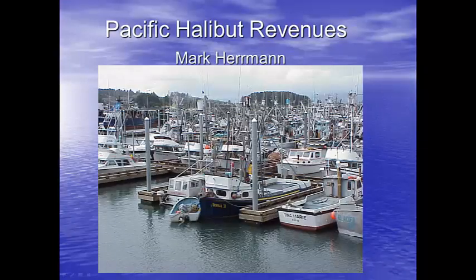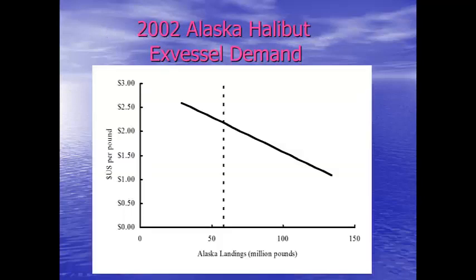I thought it might be fun to give you a real-life example of a demand curve. I'm a fisheries economist, and I've done a lot of work on Alaska fisheries. This is one example I have on Pacific halibut. The first step of estimating Pacific halibut revenues is to estimate a demand curve. This was a talk I gave back a few years ago — this is now about 10 years old. In fisheries, ex-vessel means the demand right off the vessel — so this is the demand for halibut right off the vessel.